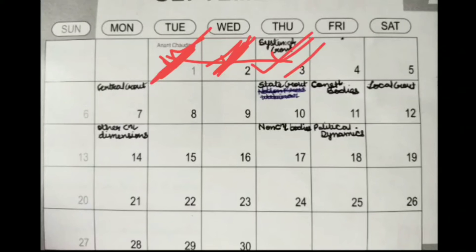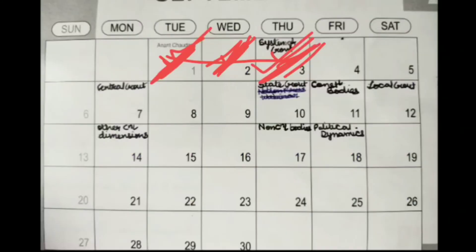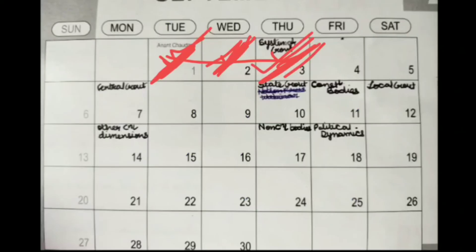On day three, you do chapter 16, which will complete the system of government. Chapter 16 is a big chapter, so I am not adding anything except chapter 21 — Cabinet Committees — because it's just about different types of committees, their features, their functions, and their groups. It's an easy portion which can be completed alongside chapter 16.